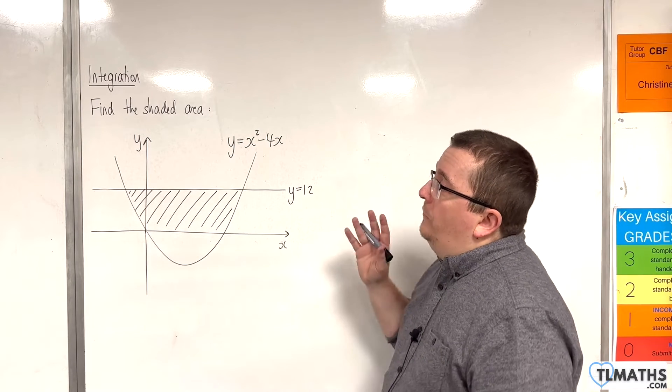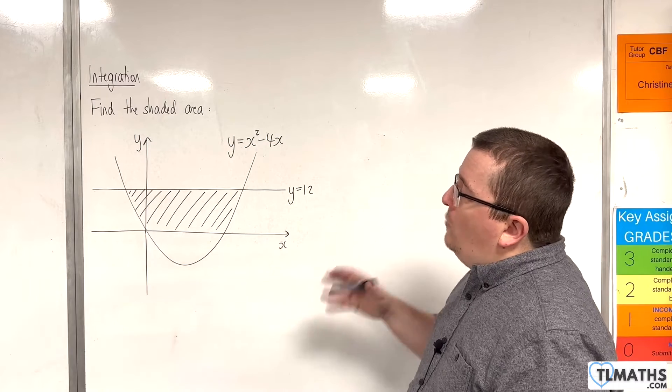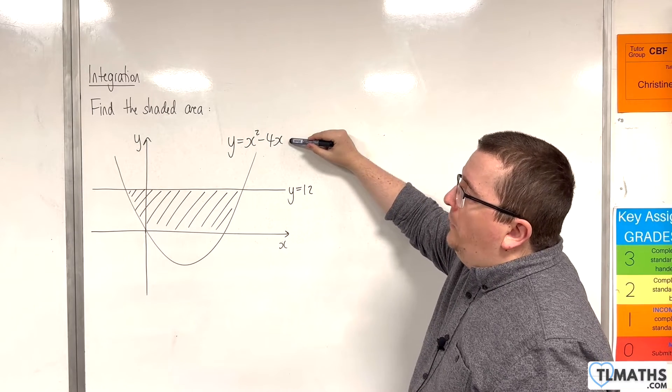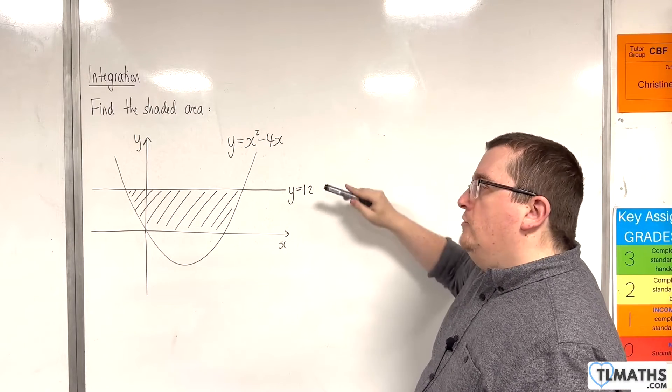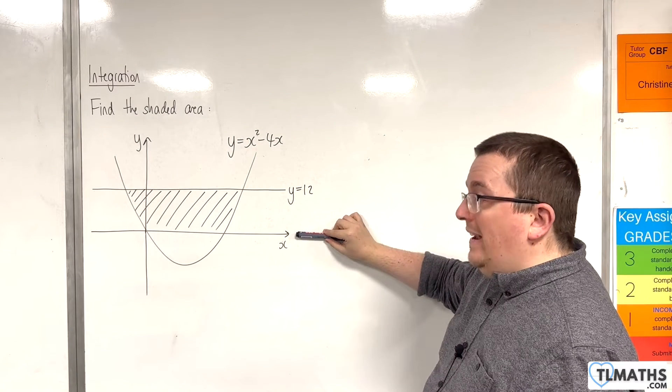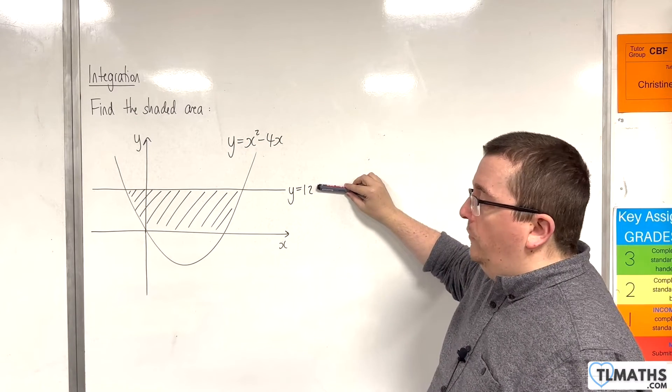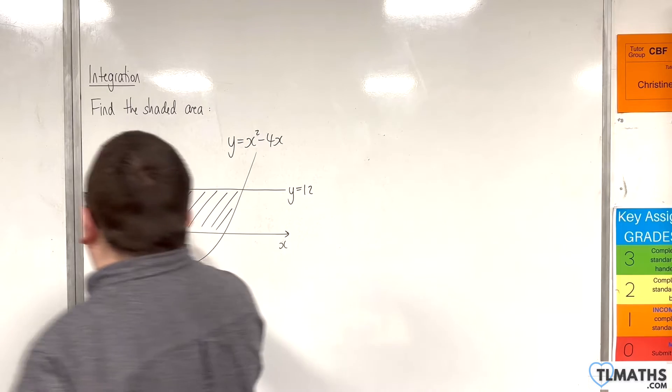In this video, we need to find the shaded area that is trapped between y equals x squared take away 4x and the horizontal lines of y equals 0 at the x-axis and y equals 12. So this shaded region here.